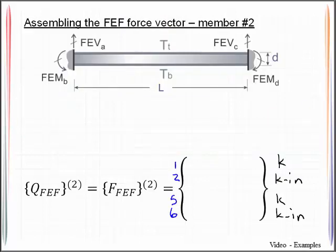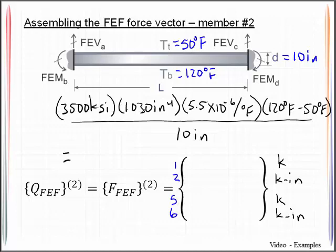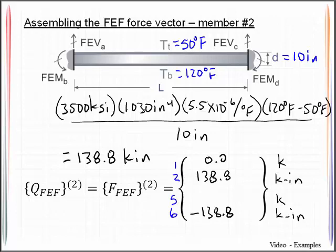So for our particular case, we have a top temperature of 50 degrees Fahrenheit, a bottom temperature of 120 degrees Fahrenheit, we have a depth here of 10 inches, and so we can go ahead and compute what those fixed-end moments are. And this will be 138.8 kip inches. And that develops at degree of freedom 2 and degree of freedom 6. There are no fixed-end shears that develop associated with that.